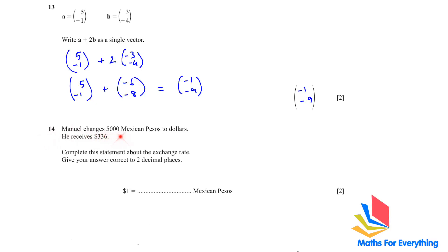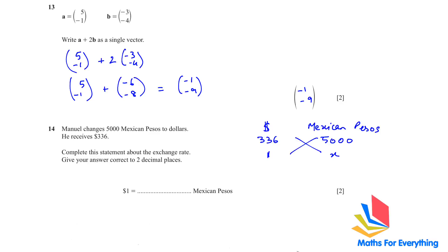Question 14: Manuel changes 5000 Mexican pesos to dollars and receives 336 dollars. Complete the statement about the exchange rate, correct to 2 decimal places. Set up: 5000 pesos = 336 dollars. Cross-multiplying to find how many pesos per dollar: x = 5000 ÷ 336, giving 14.88 pesos per dollar.